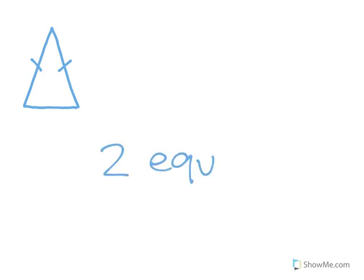The next triangle will look like this. See if you can figure that out as I'm drawing it. Okay, it has two equal sides. What type of triangle is this?